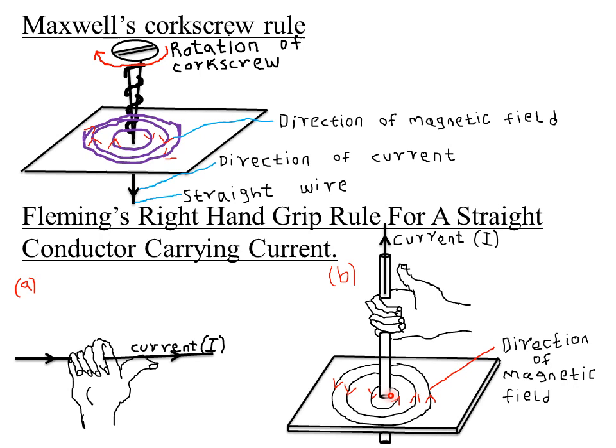We can also demonstrate the direction of the magnetic field lines using the rule. Remember the direction of the magnetic field is the same as the direction of the magnetic field lines, because the lines of force are the ones that form the magnetic field.